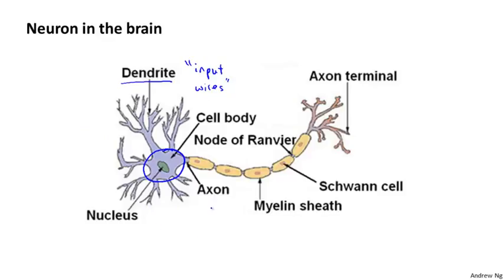And the neuron also has an output wire called the axon. And this output wire is what it uses to send signals to other neurons or to send messages to other neurons.